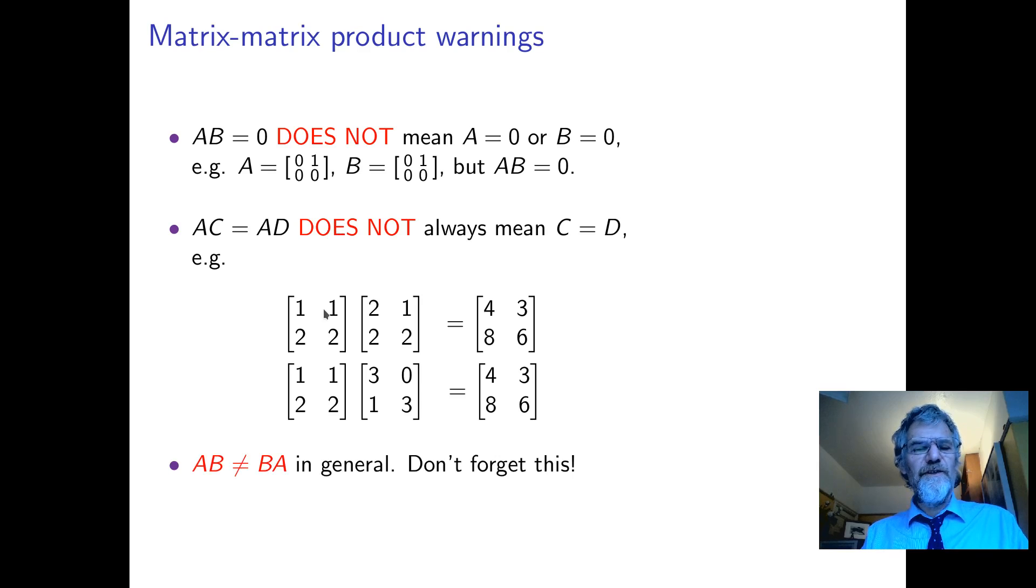Also, in general, AB and BA are different. Of course, in some cases, they might be the same. But getting a row of one and a column times another, it won't generally work out if you do it the other way around.